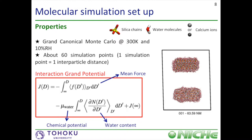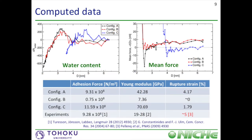Based on our simulation data, we employ the following formula to derive the interaction ground potential between particles. In this formula, we need the mean force between particles for each distance as well as the number of molecules and the chemical potential. Here we reported the number of water molecules on the top left figure and the mean force on the top right figure as a function of the inter-particle distance. The black curve stands for configuration A, the red curve for configuration B where the top particle has been rotated by roughly 90 degrees in the plane, and the blue curve for configuration C where the top particle has been rotated by roughly 90 degrees out of plane.